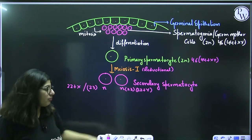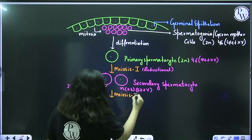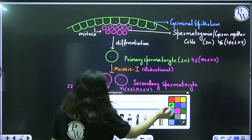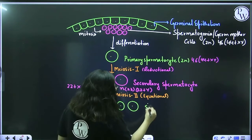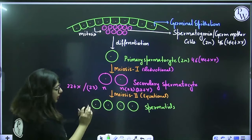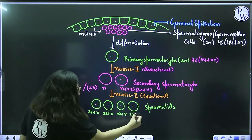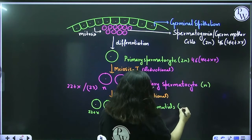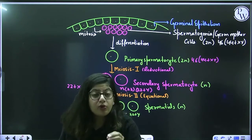Secondary spermatocytes then undergo meiosis II, which is an equational division. No further halving of ploidy occurs; instead, two more cells are formed from each secondary spermatocyte, known as spermatids. So from one 22+X secondary spermatocyte we get two spermatids with 22+X each, and from the 22+Y we get two spermatids with 22+Y each. Spermatids are also haploid. Primary spermatocyte was diploid; secondary spermatocyte and spermatid are both haploid — this is a very commonly asked exam question.